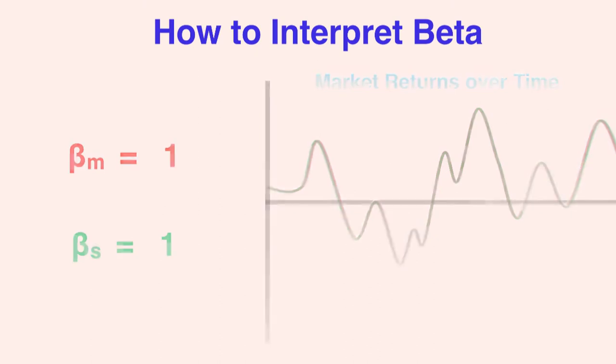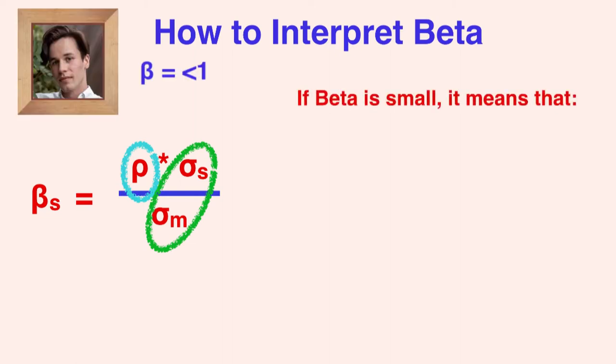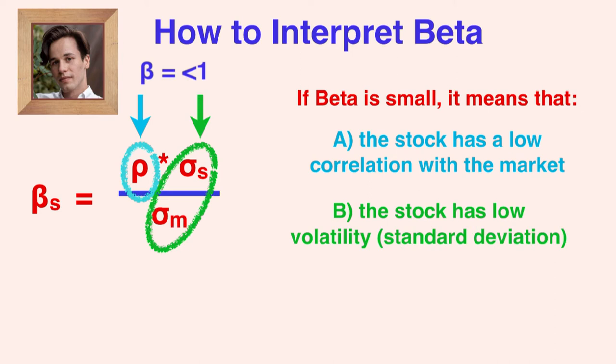Looking at the formula we just learned, we can see that a company's beta is a combination of its correlation with the market portfolio, and the ratio of its volatility to the market volatility. Therefore, there are two ways of interpreting the beta. If a beta is small, it might be because the stock does not have a high correlation with the market, or the stock itself has low volatility.